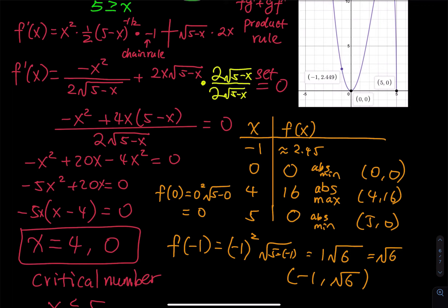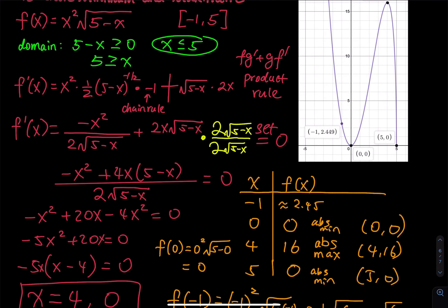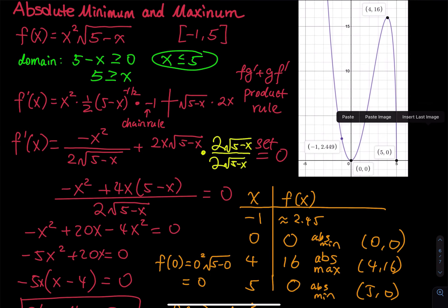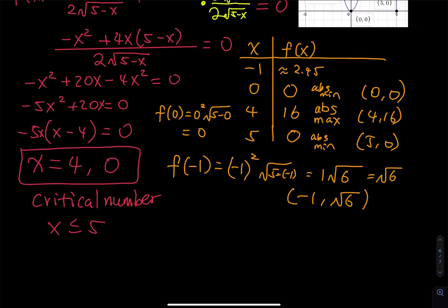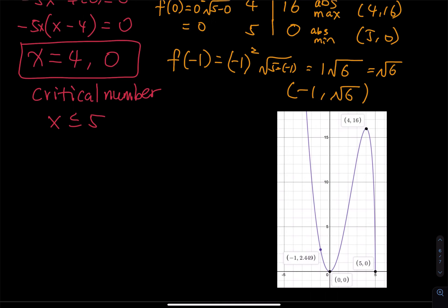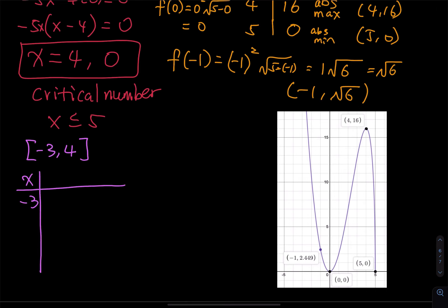Let's do another example with the interval negative 3 to 4. The critical numbers x equals 0 and x equals 4 remain the same. We need to test x equals negative 3, 0, and 4. Looking at the graph, when x equals negative 3, the point goes up high. f of 0 is 0 and f of 4 is 16.